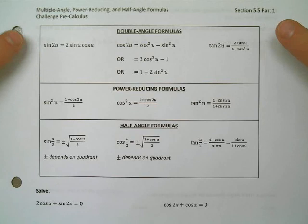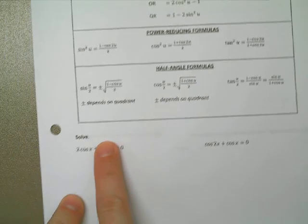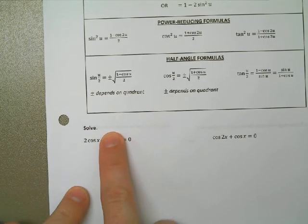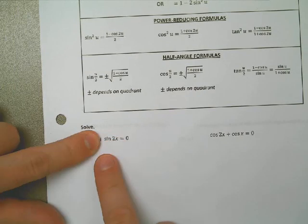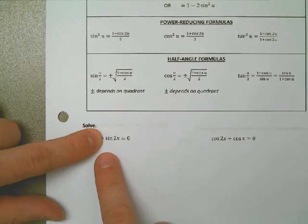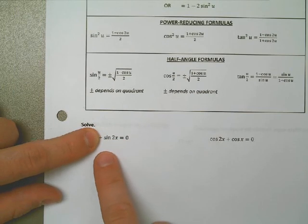So far we know how to do things like solve maybe something like this: 2 cosine of x is equal to 0. We can do that, pretty good at that. We even talked about how to do sine of 2x is equal to 0, that was in the last few lessons.